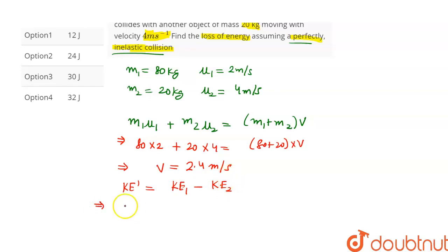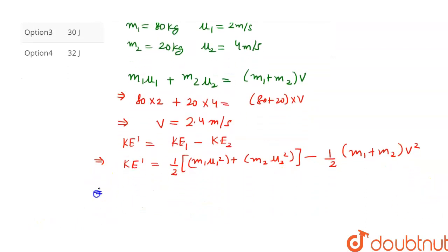This will give us the change in kinetic energy is equal to the initial kinetic energy is 1 by 2 into m1 u1 square plus m2 u2 square minus, and the final kinetic energy is equal to 1 by 2.